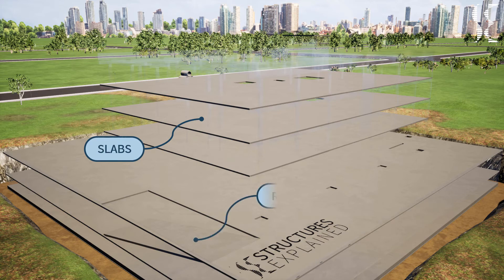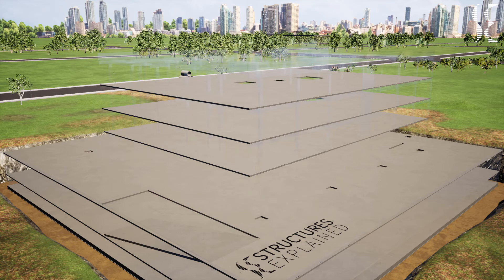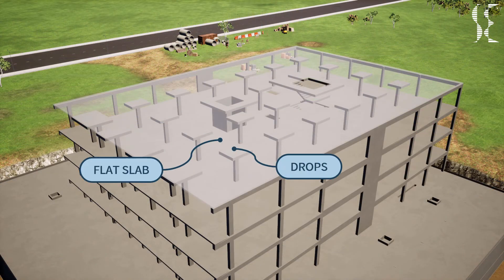The building also has a ramp which connects the basement to the podium and takes vehicular traffic. The ramp is part of the slab system and is supported by beams and columns. The second category is the flat slab system, in which the slab directly transfers load to the column with or without drops. The drops above the column prevent the punching of the column into the slab and provide stiffness over that area. If the slab thickness alone is enough to resist the shear, the drops can be removed. Flat slabs can also be accompanied by beams at required locations such as the perimeter of the building and around openings.